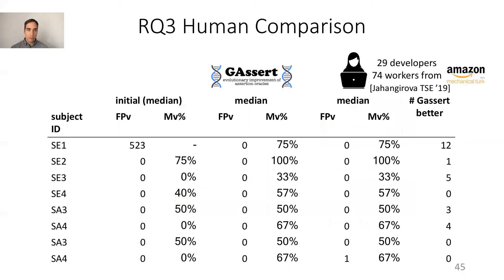For RQ3, we took the empirical data of the Jahangirova study of human-improved assertions, which contains human improvements by 29 developers and 74 workers from Amazon Mechanical Turk. We ran J-Assert with the same initial assertions used in the experiments, and we compared the false positives and mutation score with respect to the validation set. The median results are almost identical, and the last column shows the number of times in which J-Assert outperforms the human-improved assertions.